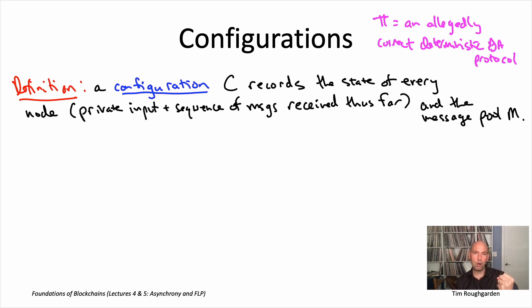The vertices of this directed graph are going to be the configurations - the possible current state of the protocol. And then a directed edge will indicate a state transition, so a message delivery, which takes you from one configuration to another.